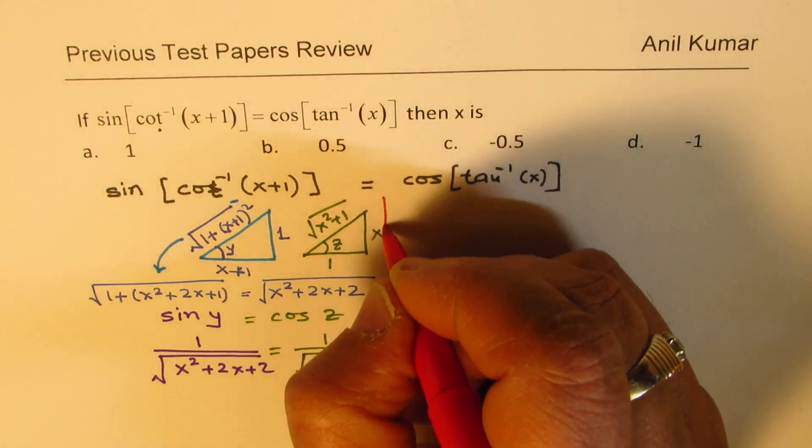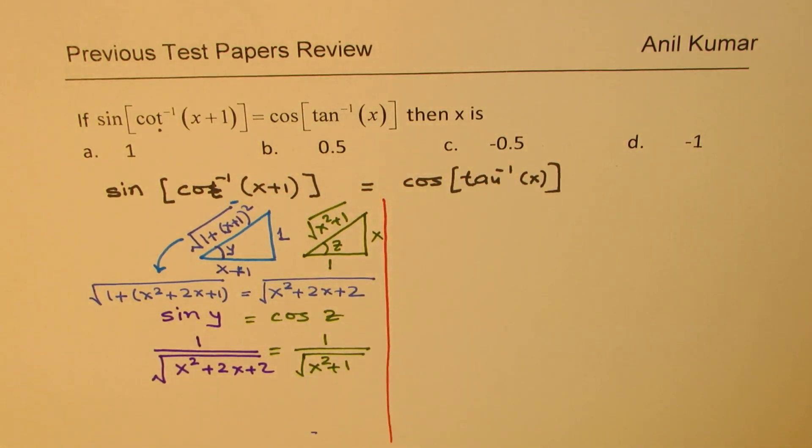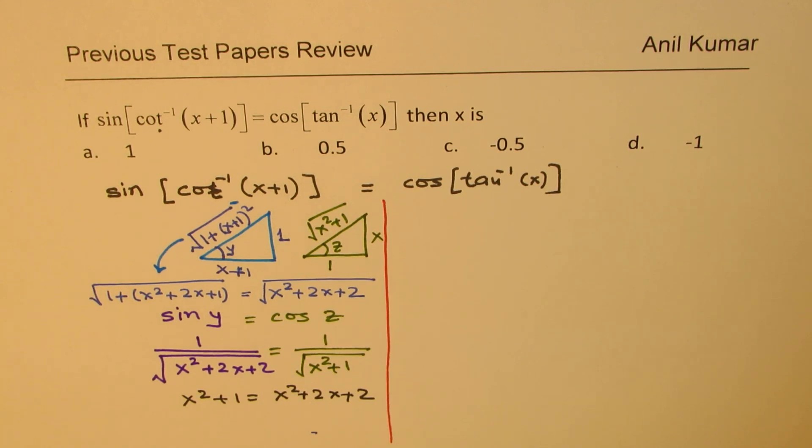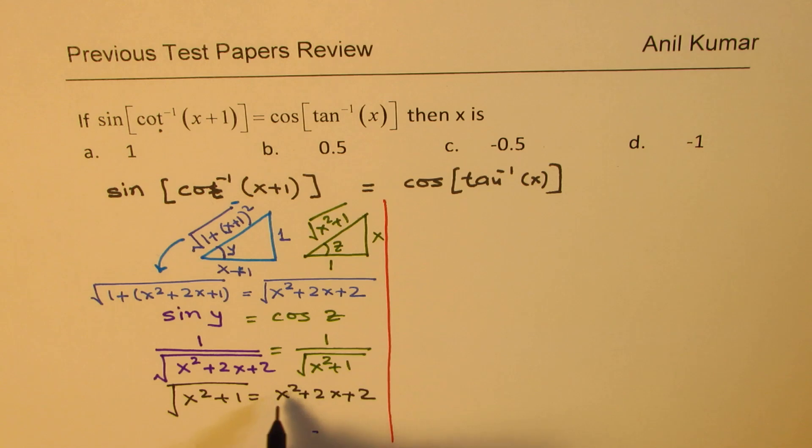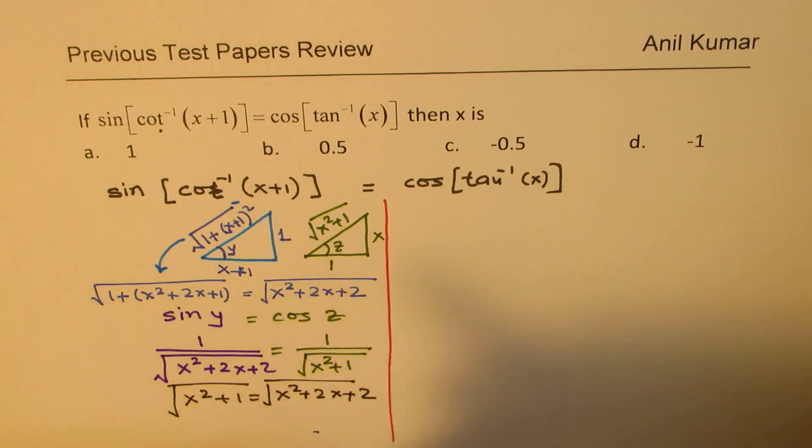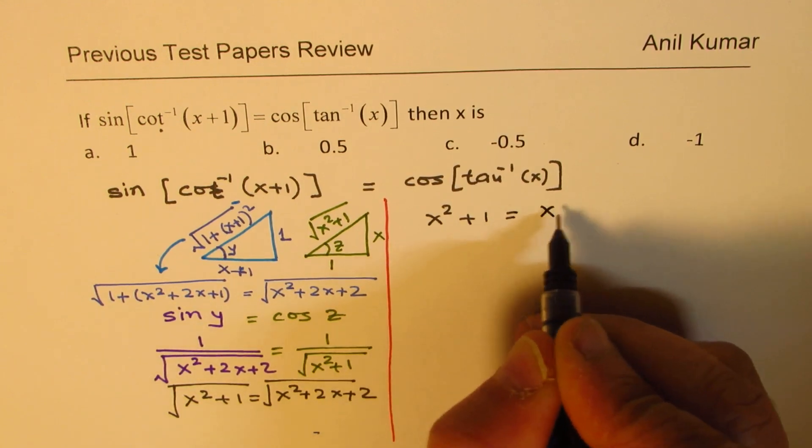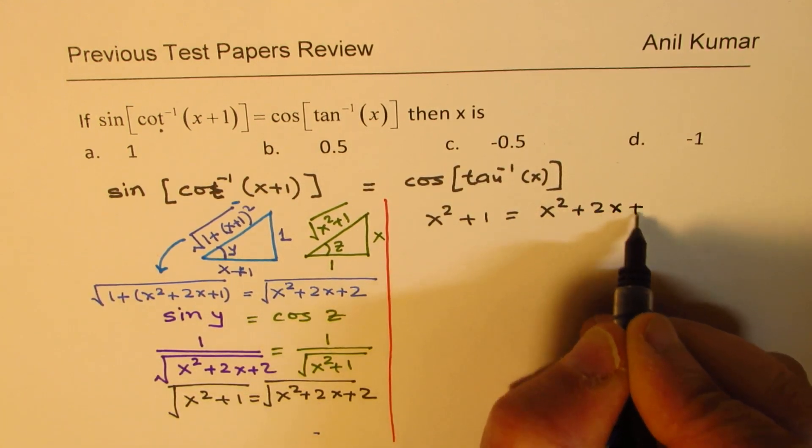Now we have an equation in terms of x that can be solved. So we'll just cross multiply and square. So what we have here is x squared plus 1 equals x squared plus 2x plus 2.